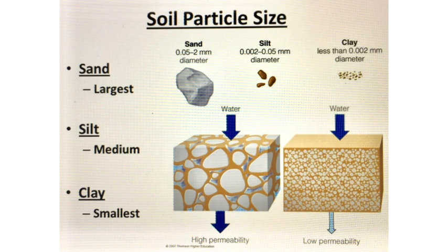As an example, a soil that has a high clay ratio to sand and silt will behave differently when water is applied in the form of rain or irrigation than a medium with less clay and a higher ratio of sand. Water passes easily through sandy soils, but slowly through predominantly clay soils.